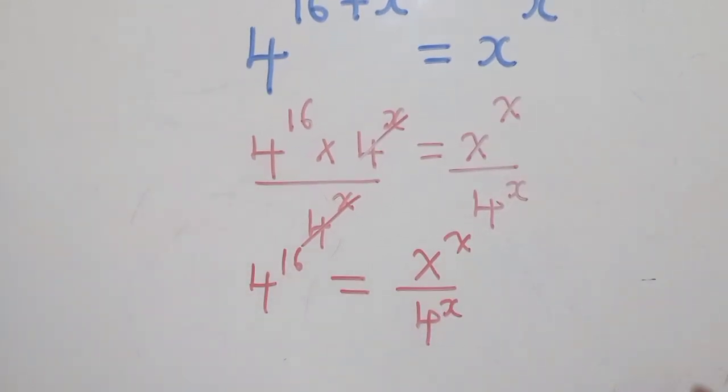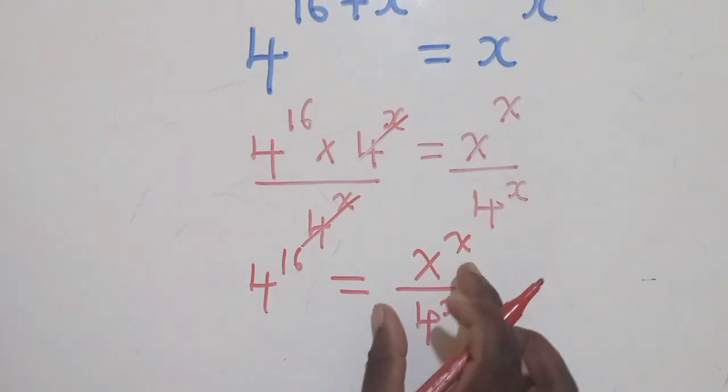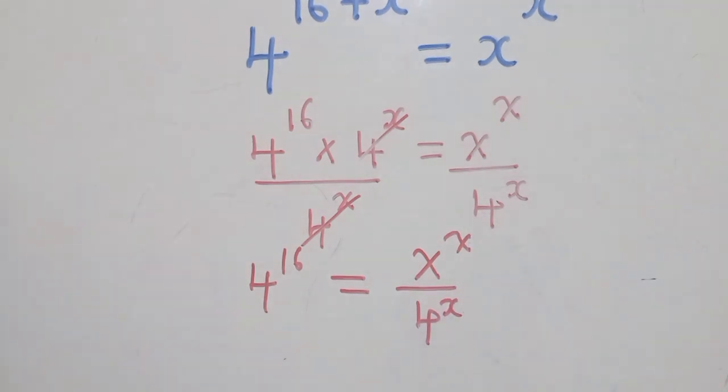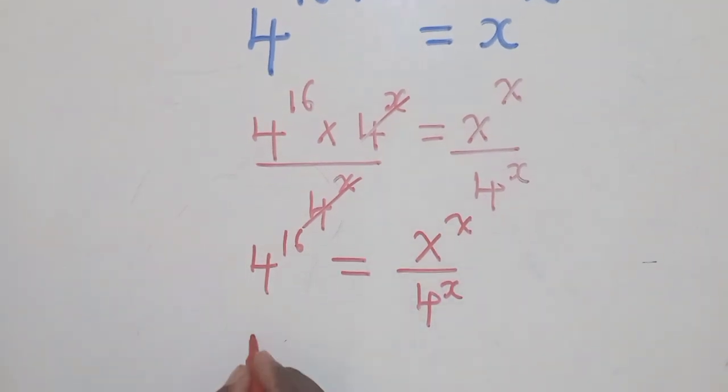From this stage we are going to use a property which says that when you've got same powers, they can come outside the brackets. Let me show you what I'm talking about.